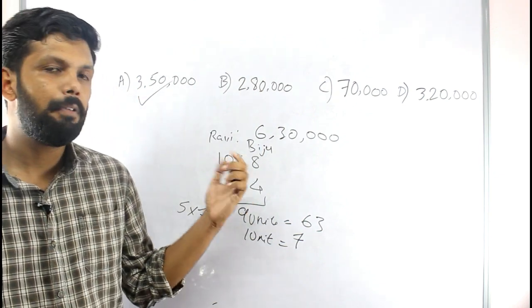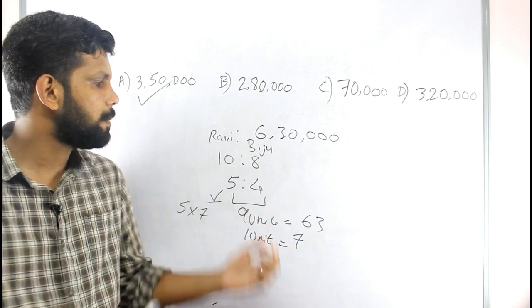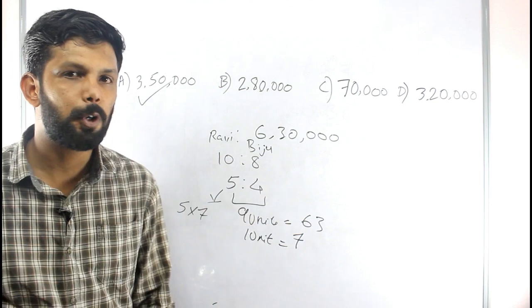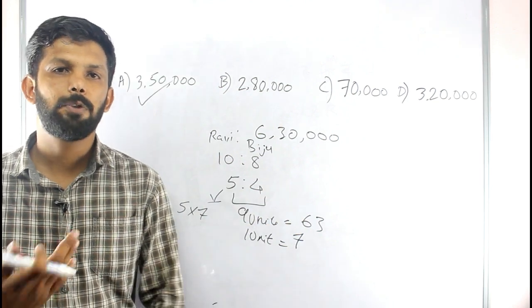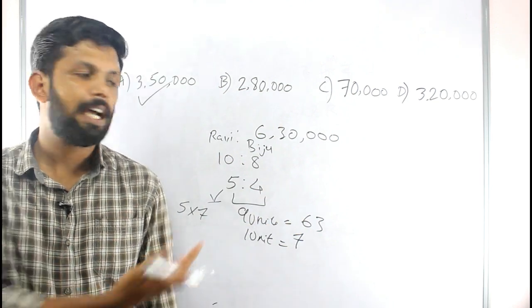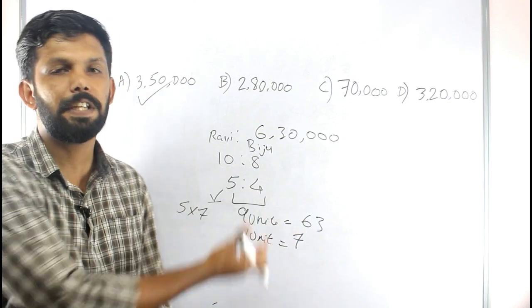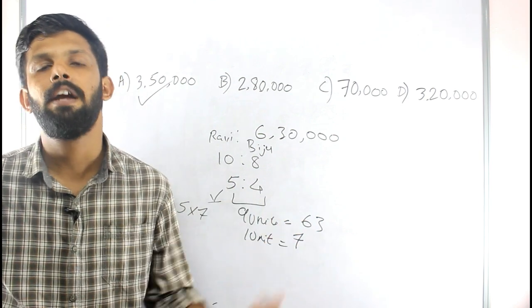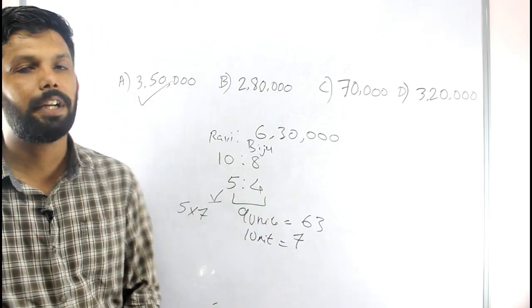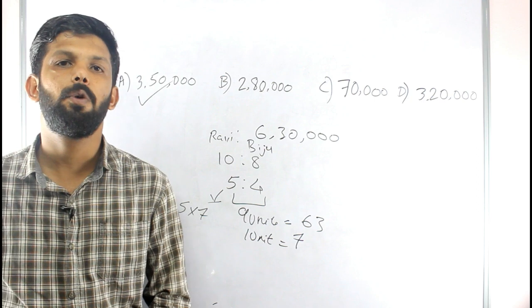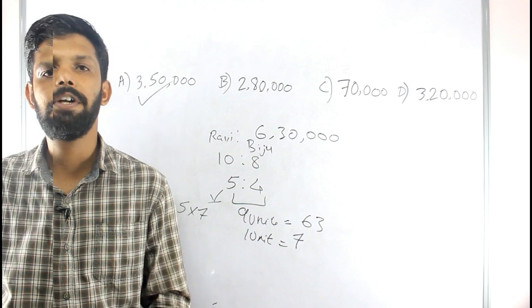Look how we simply solved the problem using the ratio method. If there are values of 10,000,000 and 8,000,000, the ratio is 5 to 4, total 9. This is how we solve problems using the ratio method.